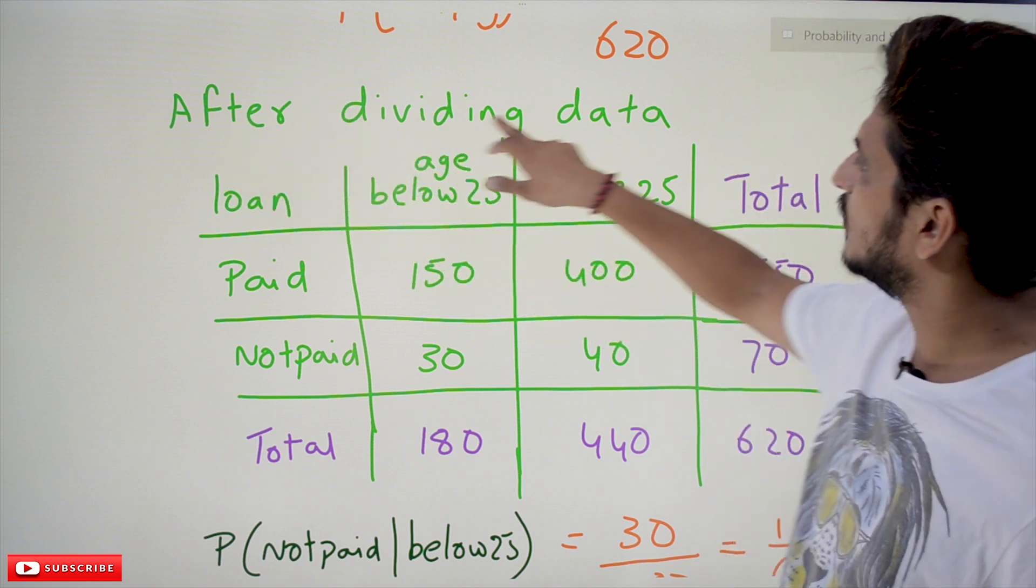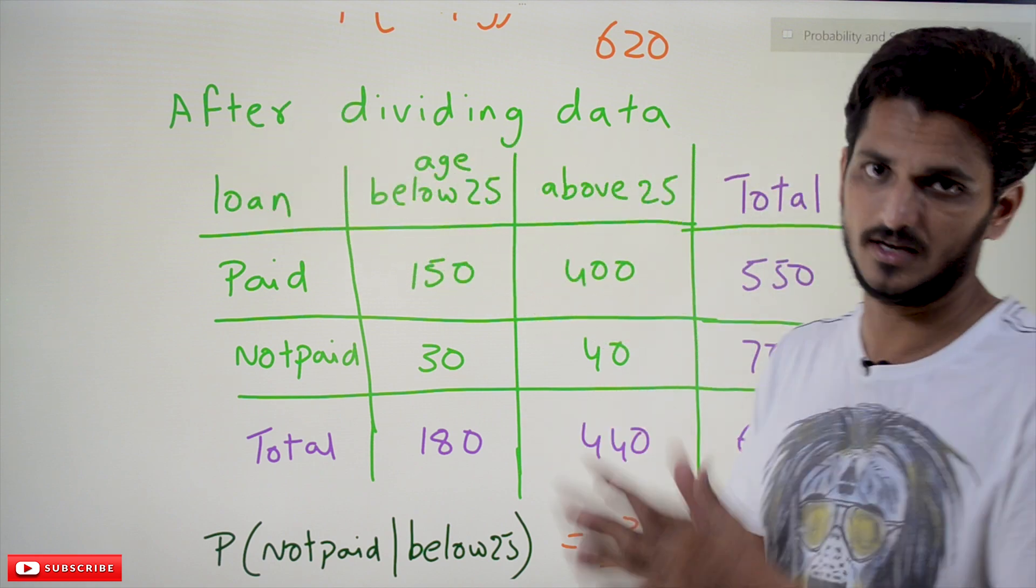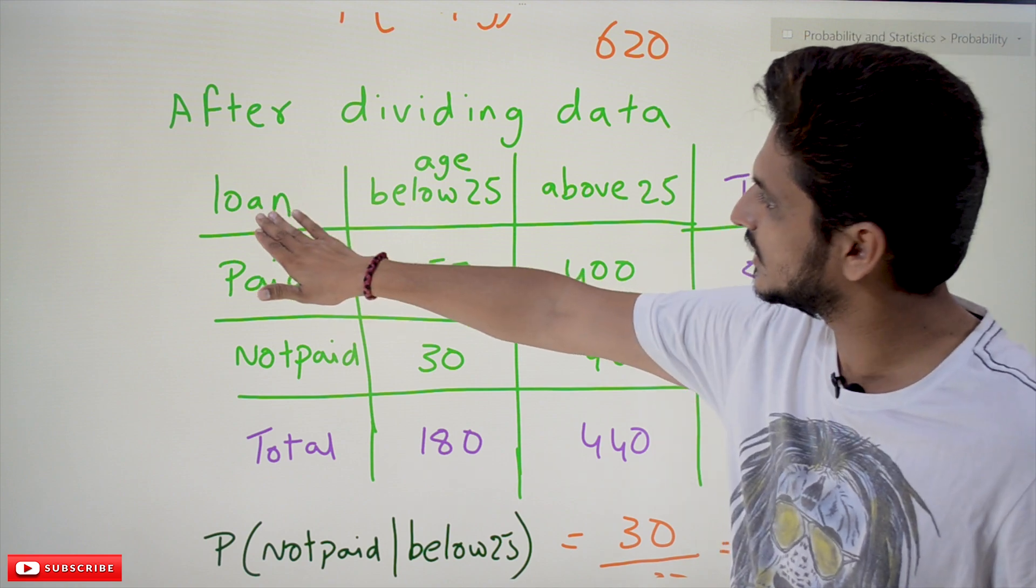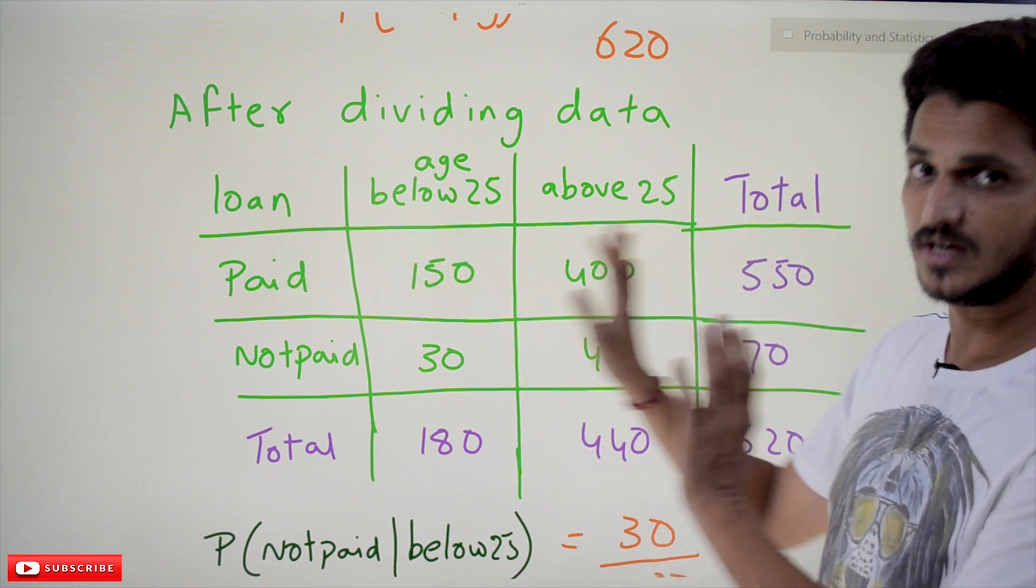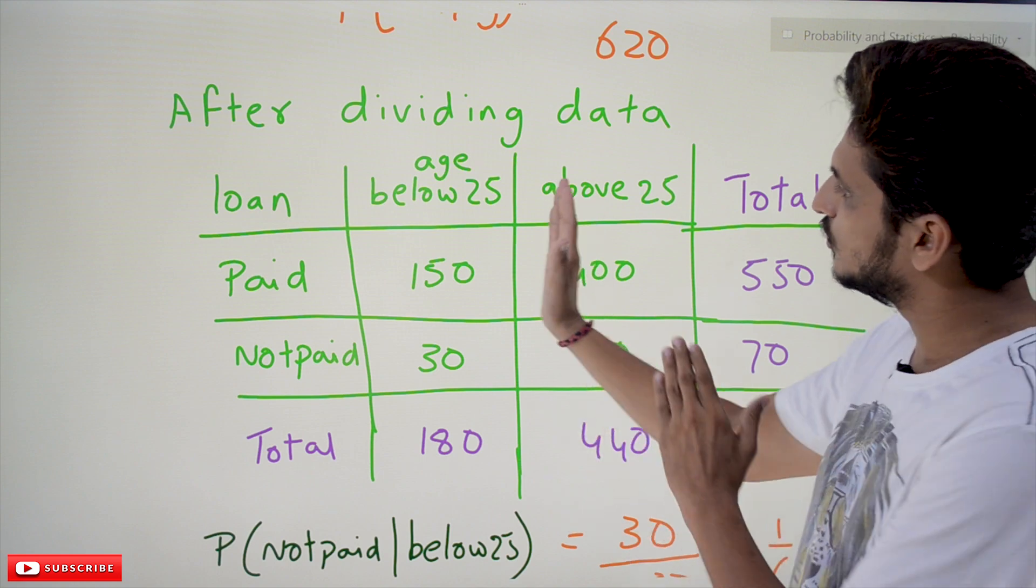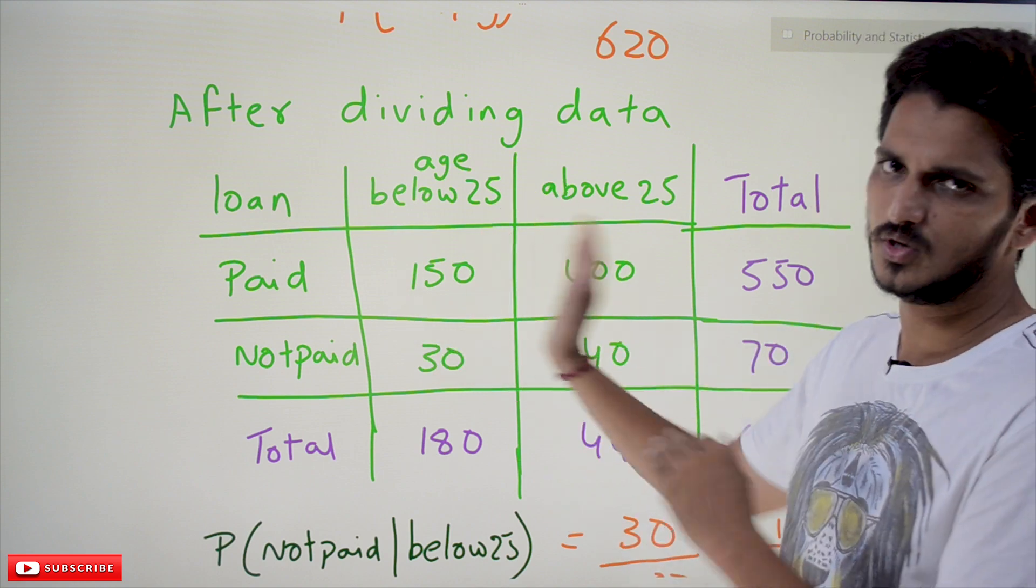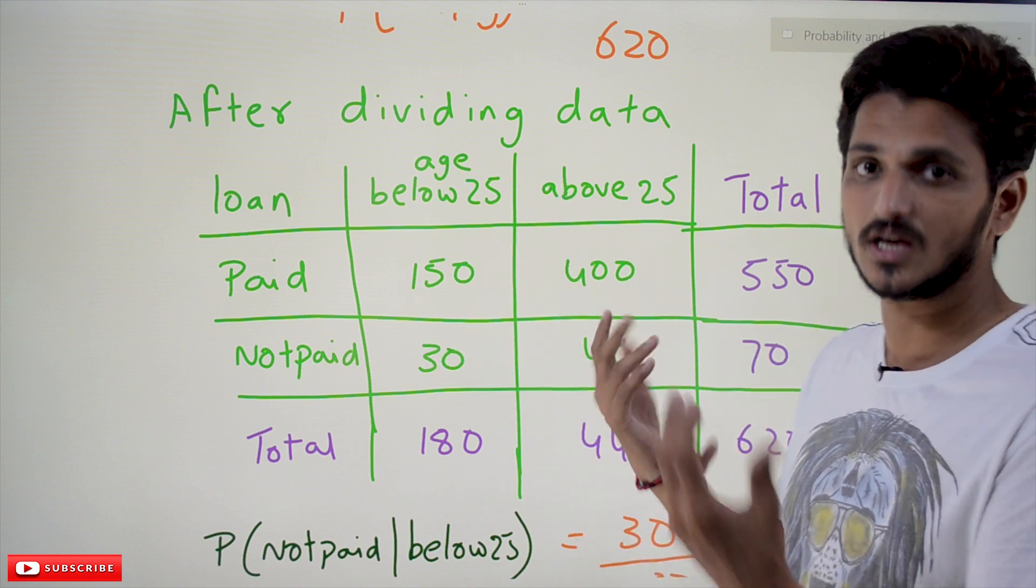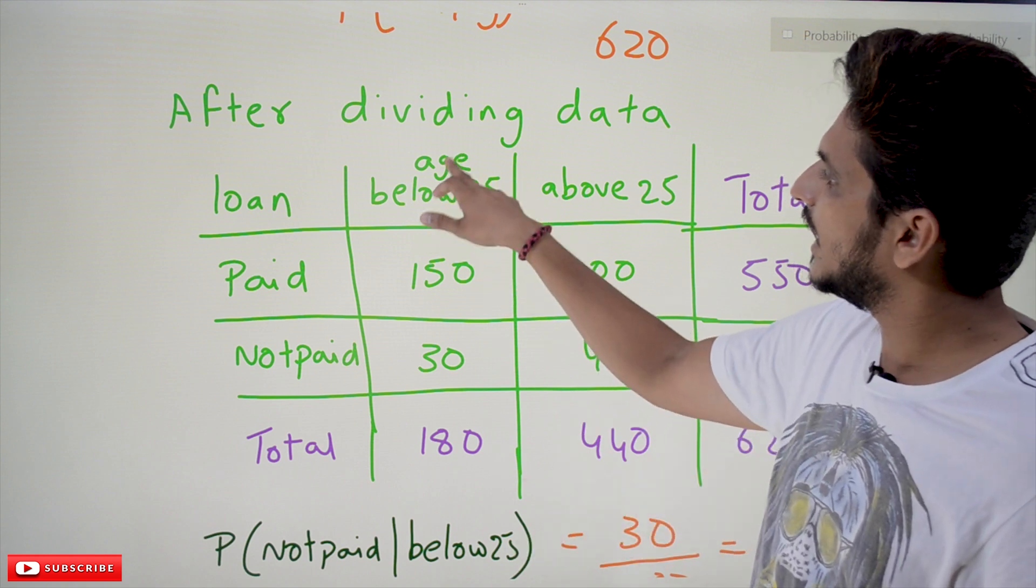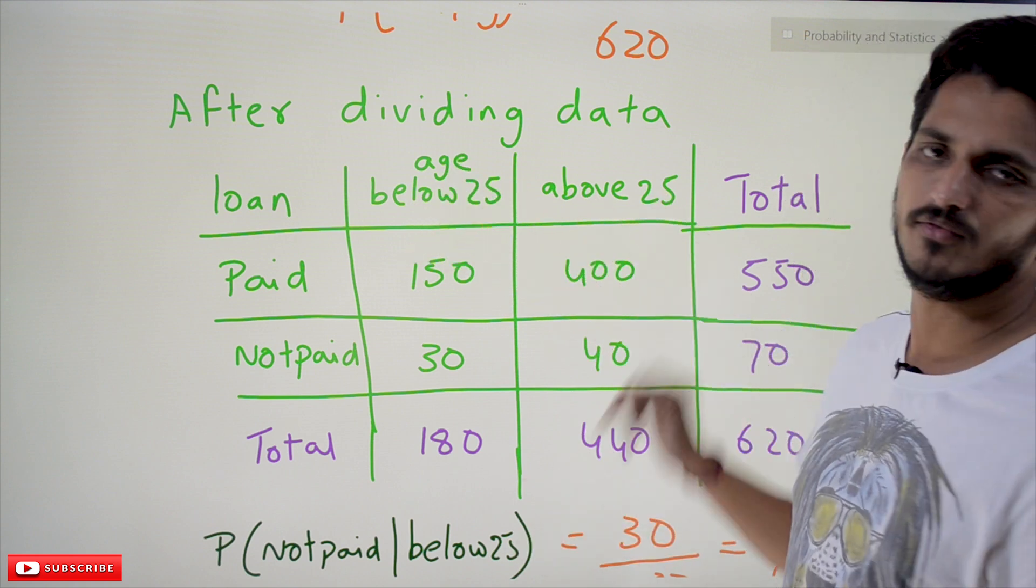For that, we have to divide the data into different categories. What we are going to do here - it's just a simple example for understanding the conditional probability - we are going to do the division only two divisions. In real time there are many requirements. So age below 25, above 25 - this is the division which we are going to do.